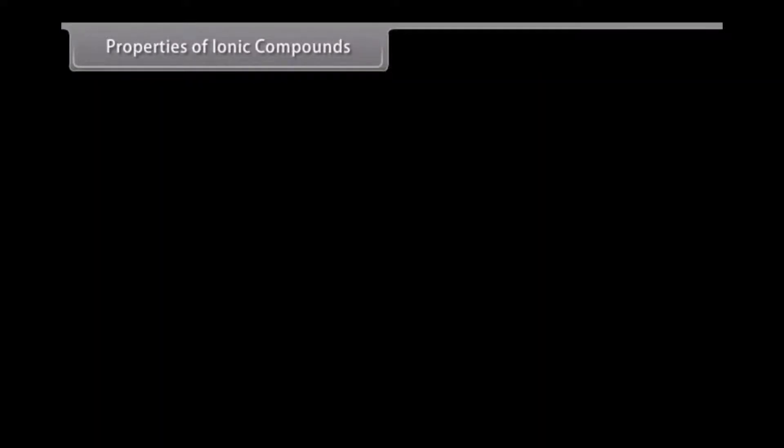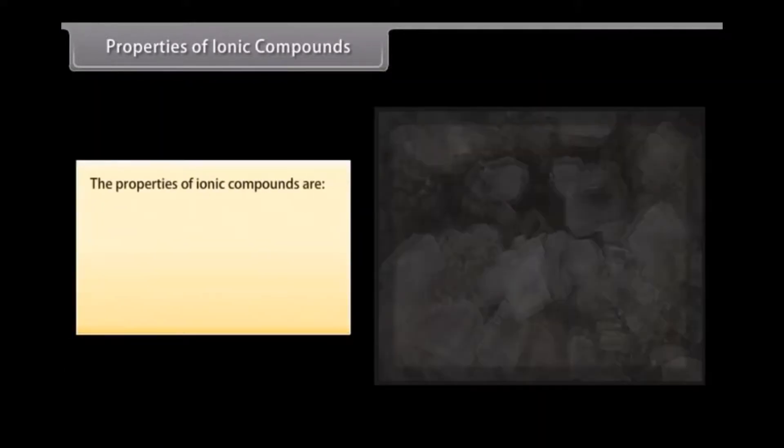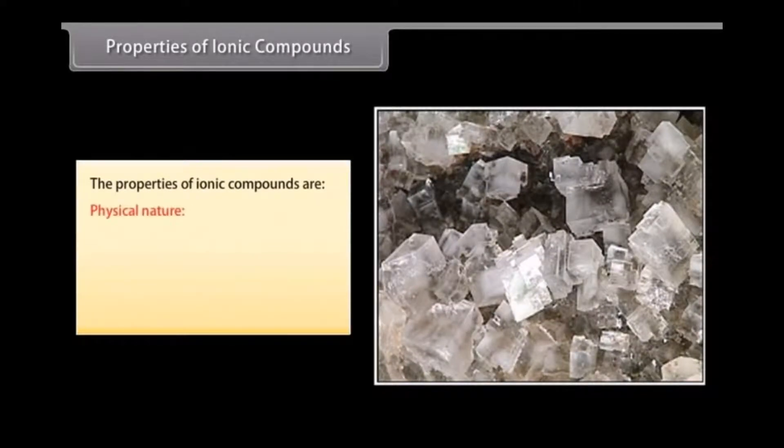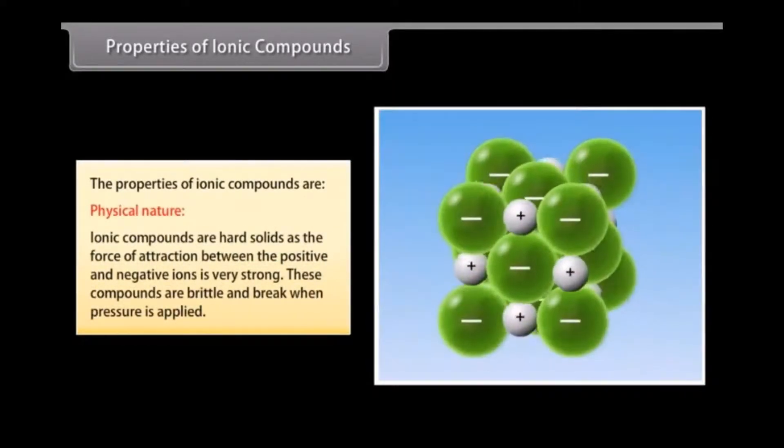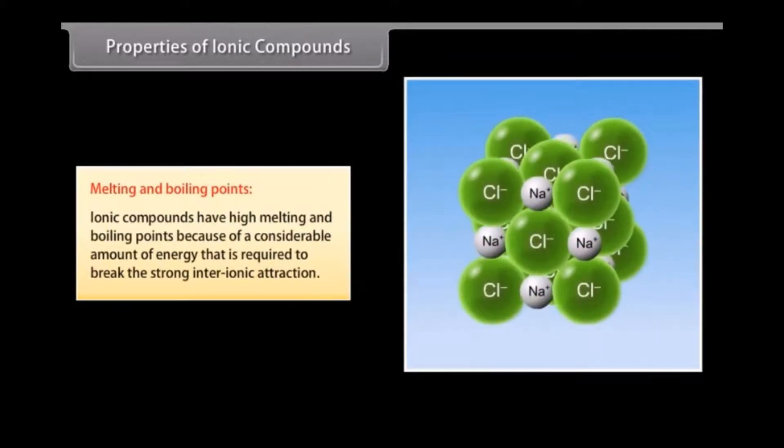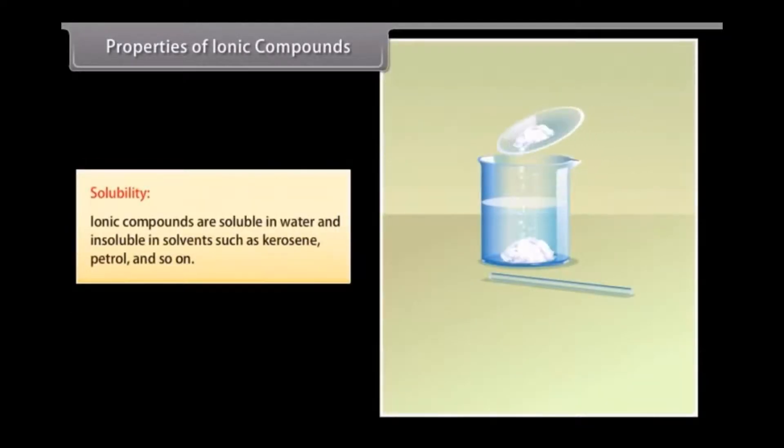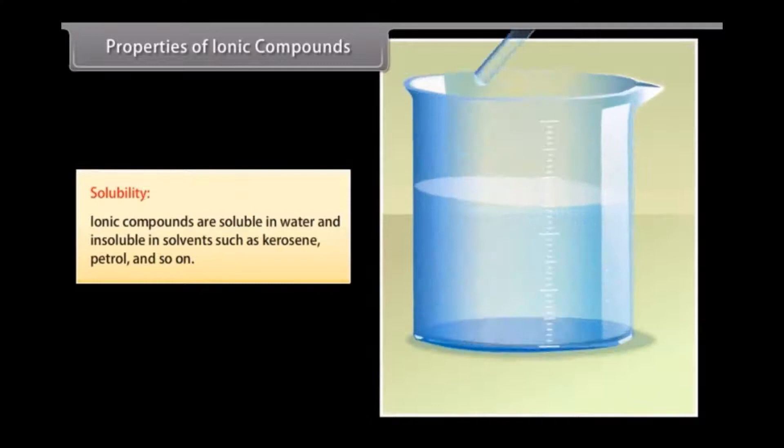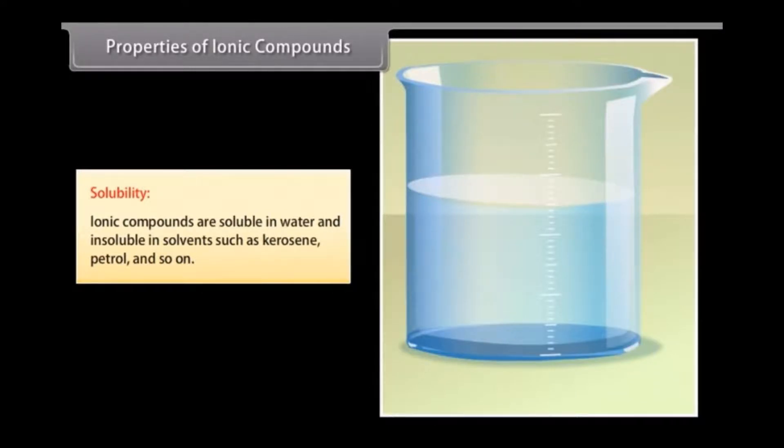Properties of Ionic Compounds. Let us look at some ionic compound properties. Physical Nature: Ionic compounds are hard solids as the force of attraction between the positive and negative ions is very strong. These compounds are brittle and break when pressure is applied. Melting and Boiling Points: Ionic compounds have high melting and boiling points because of a considerable amount of energy that is required to break this strong inter-ionic attraction. Solubility: Ionic compounds are soluble in water and insoluble in solvents such as kerosene, petrol and so on.